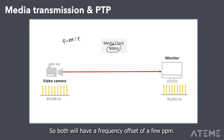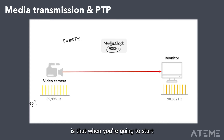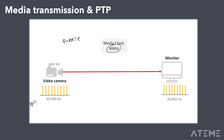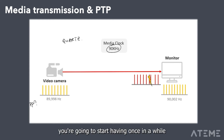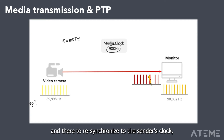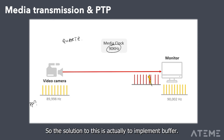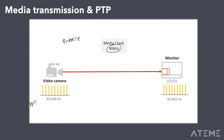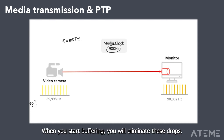Both will have a frequency offset of a few ppm. The consequence is that when you start sending a bitstream from sender to receiver, since they are not at exactly the same frequency, you'll occasionally have drops in the bitstream. The receiver may have to drop some packets or bits here and there to re-synchronize to the sender's clock, which is slightly different from its own.